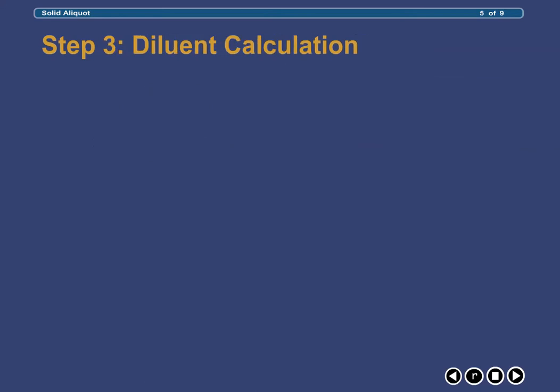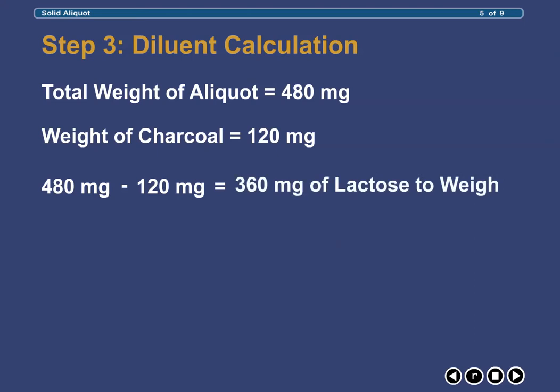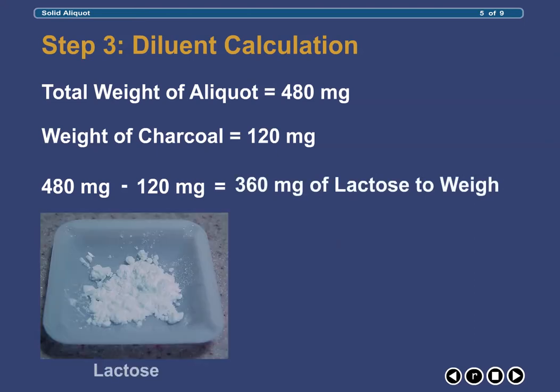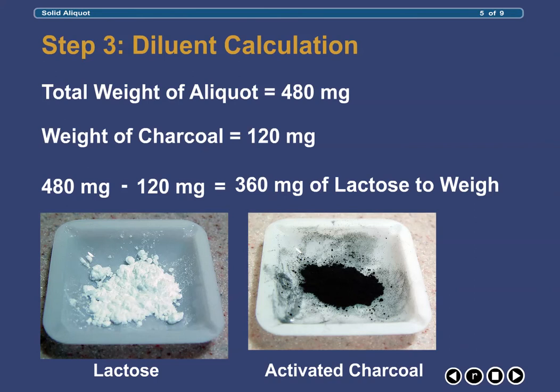Next, we must determine the amount of diluent that will be required to prepare the aliquot. This is done by first taking the total weight of aliquot that we need to prepare, calculated previously to be 480 mg, then subtracting from that total weight 120 mg of charcoal. Because, remember, that in order to prepare our aliquot, 120 mg of the total weight needed has to come from the activated charcoal. Performing this calculation, we determine that 360 mg of diluent, that is lactose in this case, will be needed to combine with activated charcoal in order to prepare the aliquot.